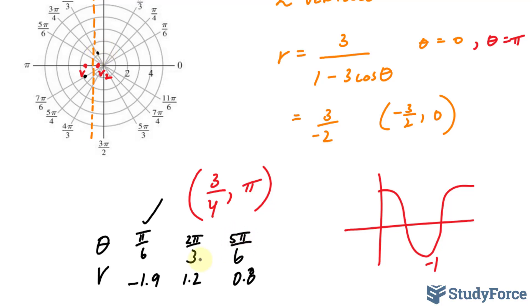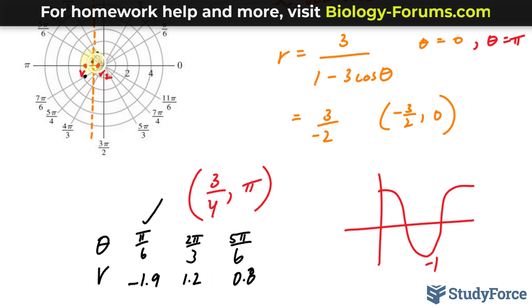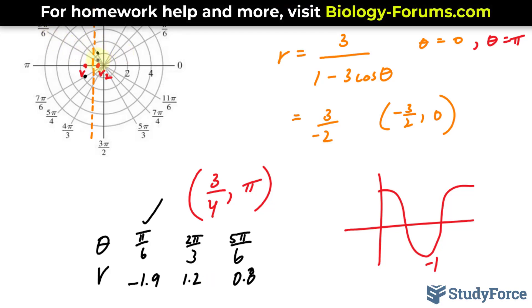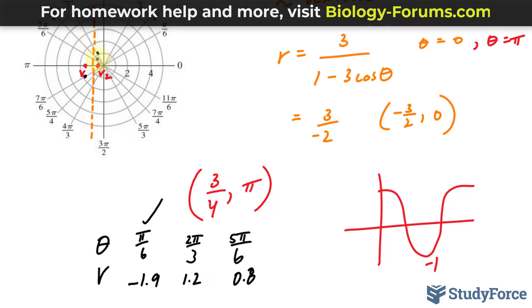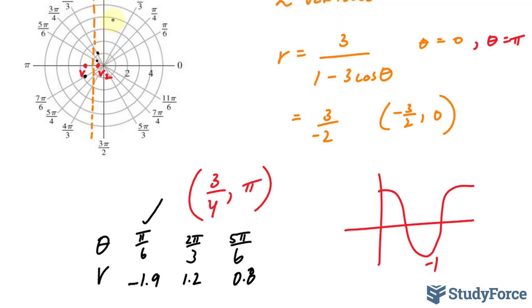And finally, 5 pi over 6 at 0.8. 5 pi over 6, 0.8 is just shy of that first circle. So our hyperbola will begin to shape up like this.